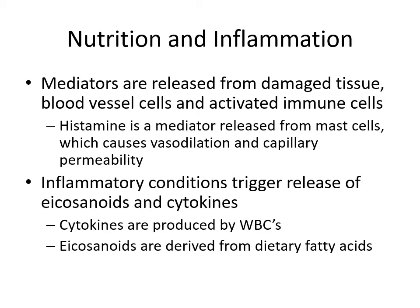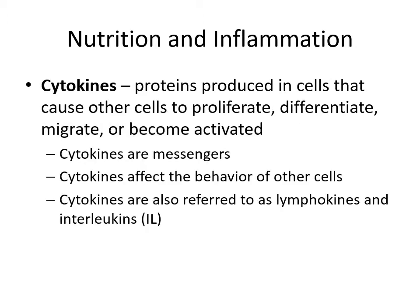Inflammatory conditions trigger the release of eicosanoids and cytokines. Cytokines are produced by white blood cells and eicosanoids are synthesized from dietary fatty acids. Cytokines are proteins produced in cells that cause other cells to proliferate, differentiate, migrate, or become activated — kind of like hormones in that they tell other cells what to do, but they're much more localized in their effect.